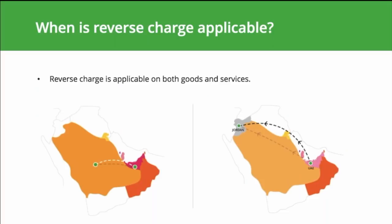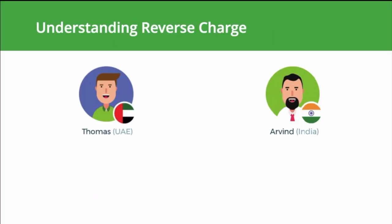Reverse charge is applicable on both goods and services and there are two main scenarios. Case 1: if a taxable person in one GCC member state receives a supply from a supplier in another GCC member state, the receiver will have to pay VAT under the reverse charge mechanism. Case 2: if a taxable person receives supply from a supplier outside the GCC, they will also have to pay VAT according to the reverse charge mechanism.